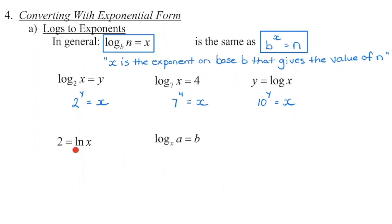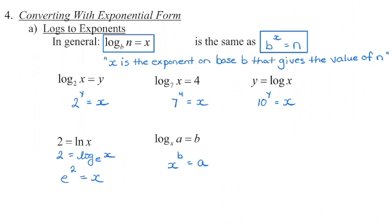This one uses ln, and we know that ln is log base e. Some people like to rewrite it as log base e to help themselves out. Then: 2 is the exponent on base e that gives us the value of x, so e squared equals x. Pause and try the last one yourself. B is the exponent on base x that gives us the value of a, so x to the power of B equals a. Good job.